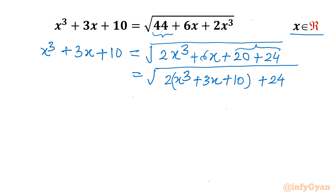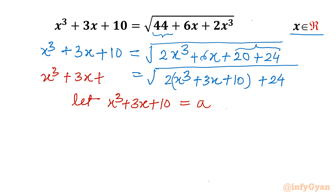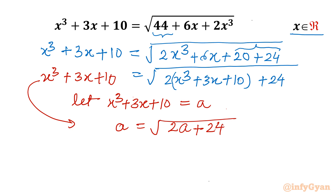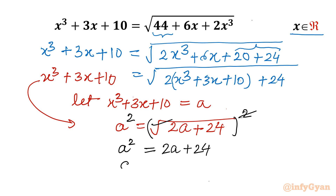The left hand side is x³ + 3x + 10. Now it is substitution time. Let me write x³ + 3x + 10 = a. So I will write this side as a = √(2a + 24). Now I will consider squaring both sides. So a² = 2a + 24, or a² − 2a − 24 = 0.